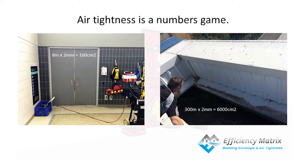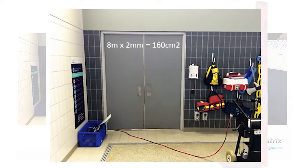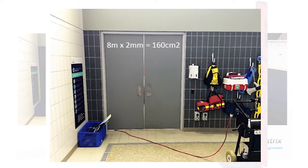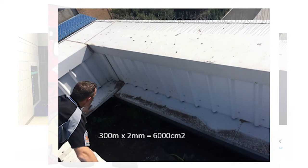When you talk about sealing or air tightness, the first thing that comes to mind is windows and doors. In a double door, even a 2–5mm gap around it gives you 160 to 300 cm² of gap. But when you look at your parapet detail around your roof, even just a 2mm gap around 300m of perimeter means 6,000 cm² of gap. All the tiny bits add up.